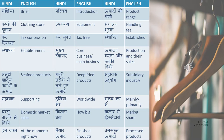Is vakt means at this moment or right now. Tayar utpad means finished products. Prasanskrit utpad means processed products. Prasanskaran is processing, prasanskrit is processed. So tayar utpad is finished products and prasanskrit utpad is processed products.